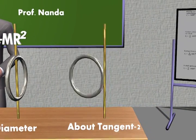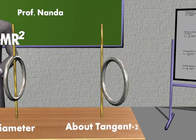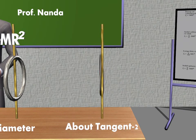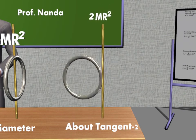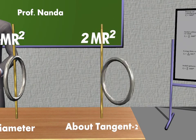And Case 4: this is the rotation of a ring about a tangent in its plane. Its Moment of Inertia is given by 2 mR square.